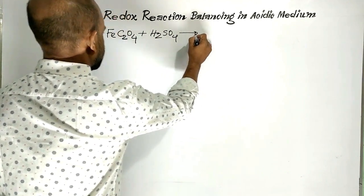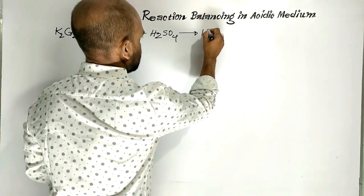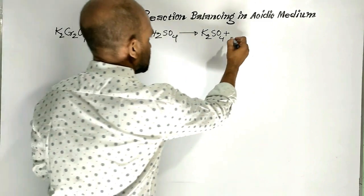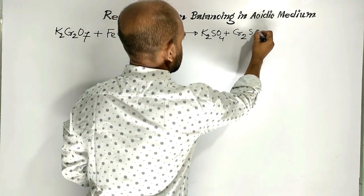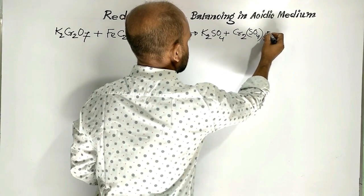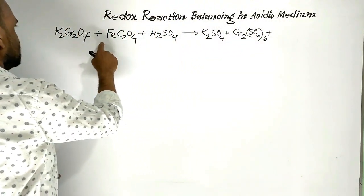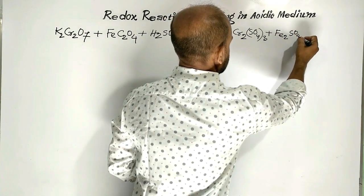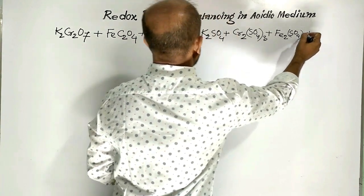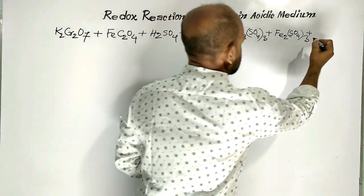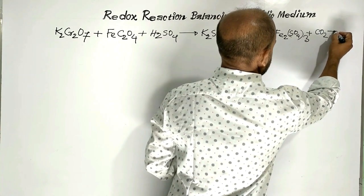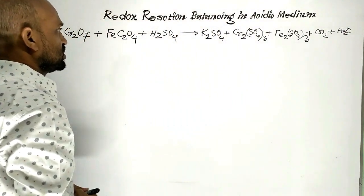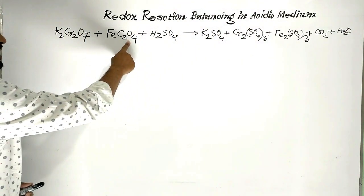The products are Potassium Sulphate, then Chromic Sulphate, then Ferric Sulphate, then Carbon Dioxide and Water. Now we are going to learn how to balance this reaction.